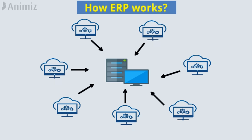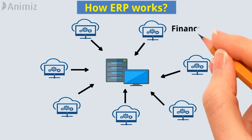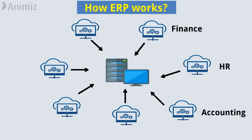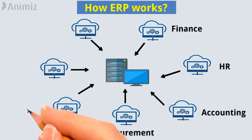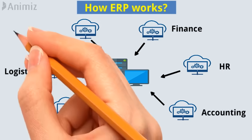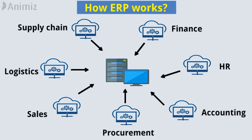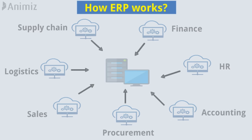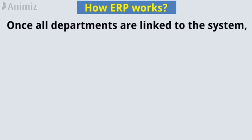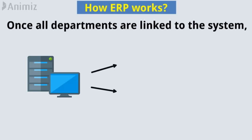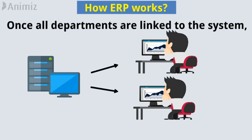There are many components such as finance, HR, accounting, procurement, sales, logistics, and supply chain. Companies can choose the modules they want and can add on and scale as required. Once all departments are linked to the system, all data is collected on the server and becomes instantly available to those with permission to use it.